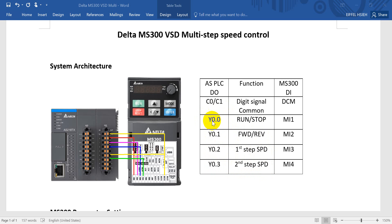Different outputs connect to different inputs. Here we show two step speeds. If you need more speeds, you can use more digital outputs from SPOC connected to the MI of the VSD. The MS300 has a total of seven digital inputs, up to MI7.